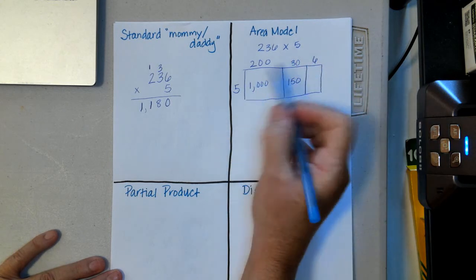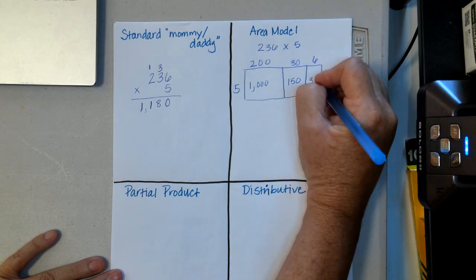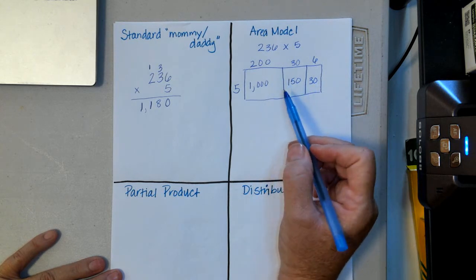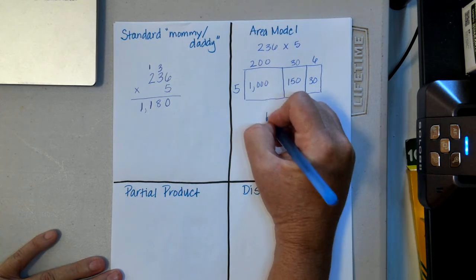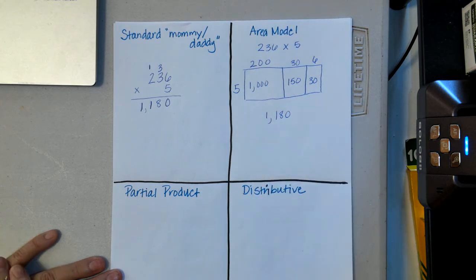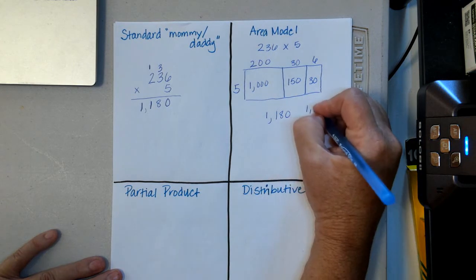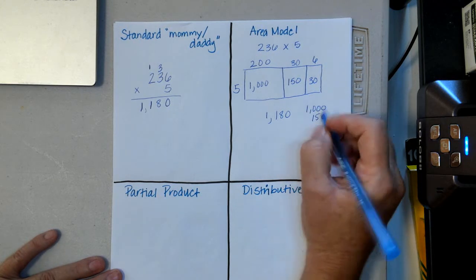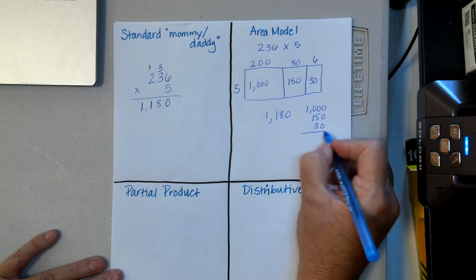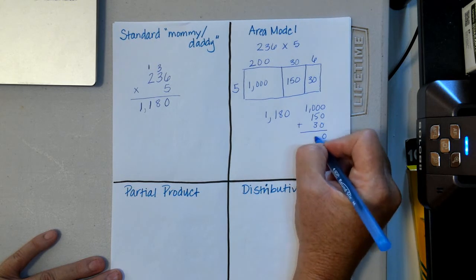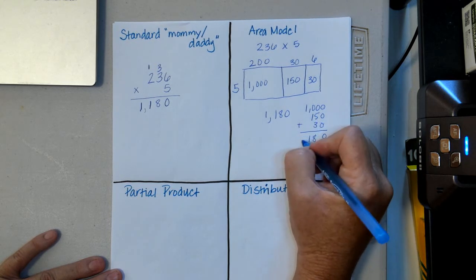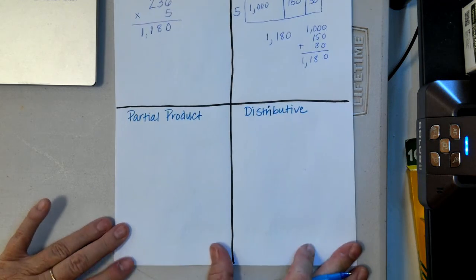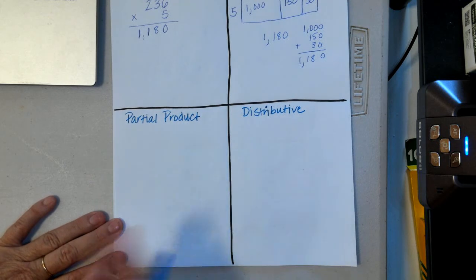Now I multiply each part: five times two hundred is one thousand, five times thirty is one hundred and fifty, and five times six is thirty. If I add all of those together — one thousand, one hundred fifty, and thirty — I get one thousand one hundred and eighty. You can see it right there.